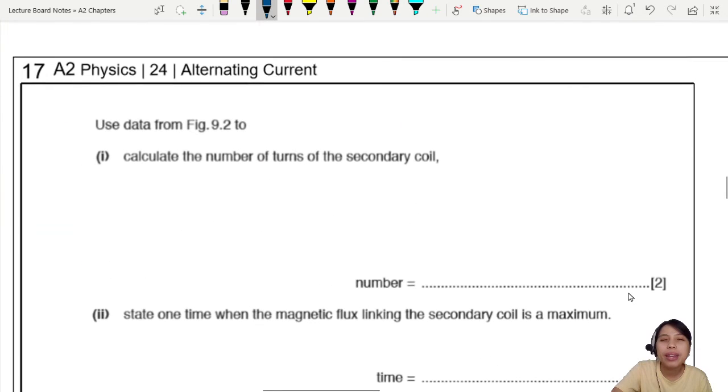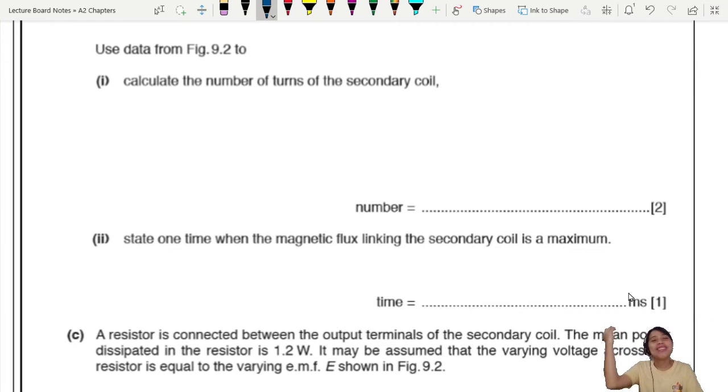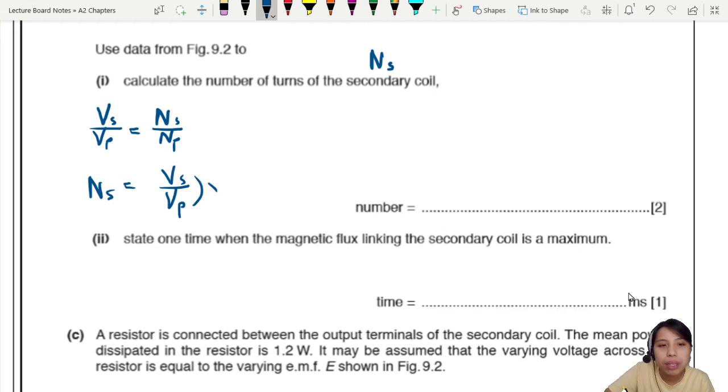Use the data from figure 9.2 to calculate the number of turns of the secondary coil. You gotta remember we have the same flux linking both coils, so we can do a ratio. The voltage ratio: secondary over primary equals the ratio of number of turns in the secondary over primary. So if you want to find Ns, you do voltage of secondary over primary times Np.